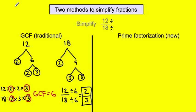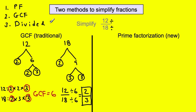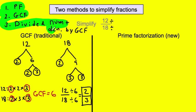If you're going to be using the greatest common factor method: number one, find the prime factorization; number two, identify the greatest common factor; and number three, divide numerator and denominator by the GCF. There are our notes for the traditional method. It worked when I was a boy, and it works now.